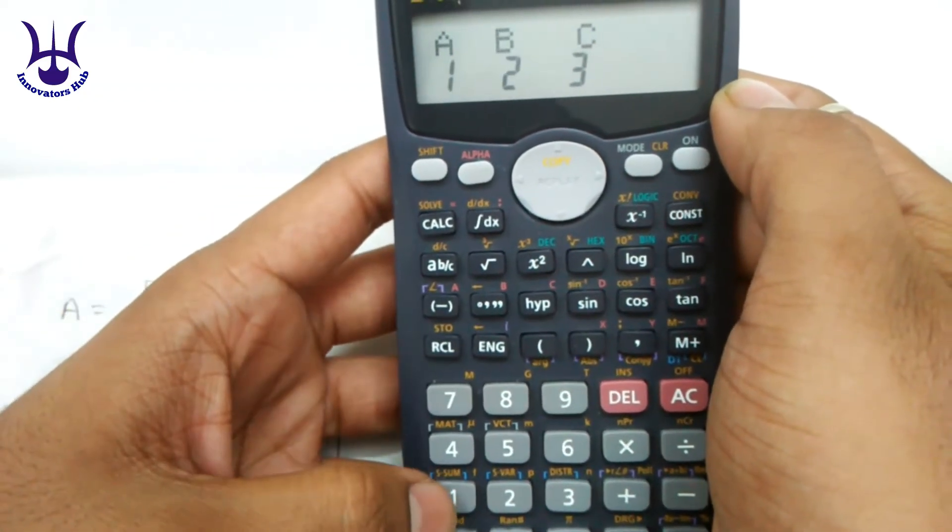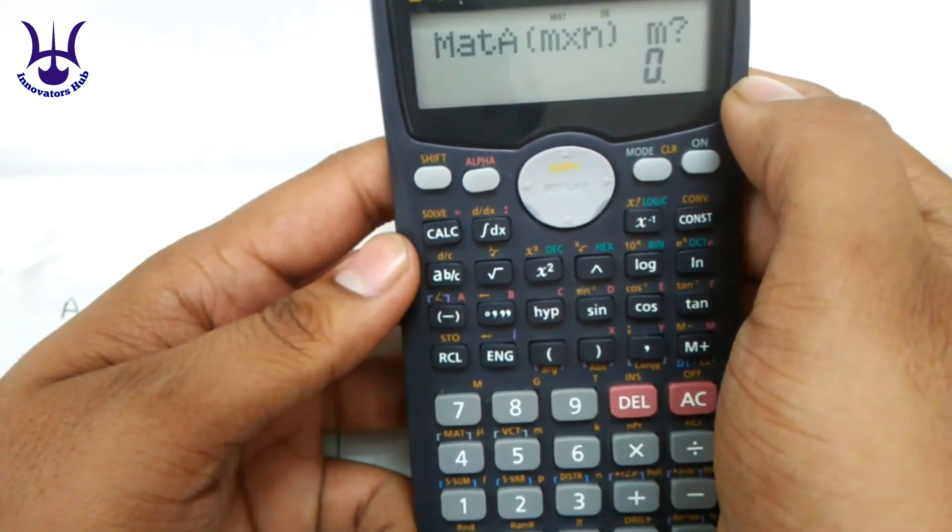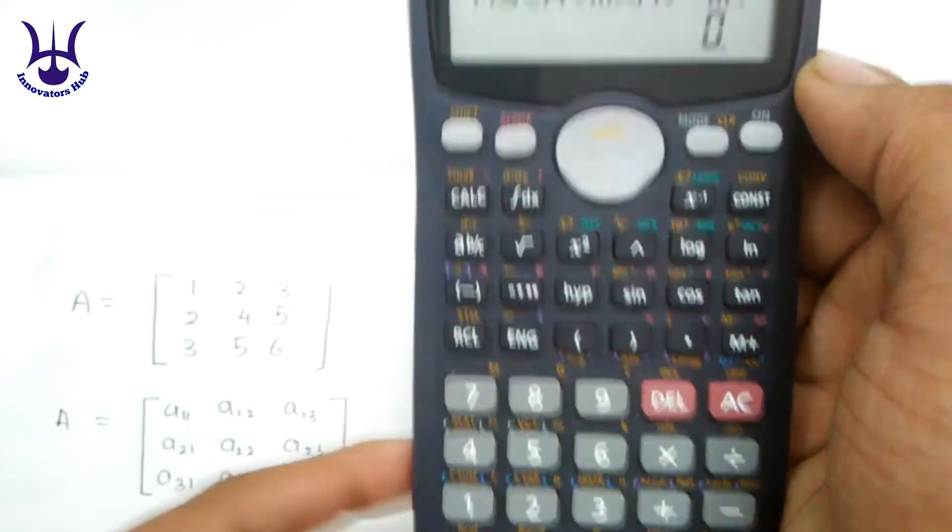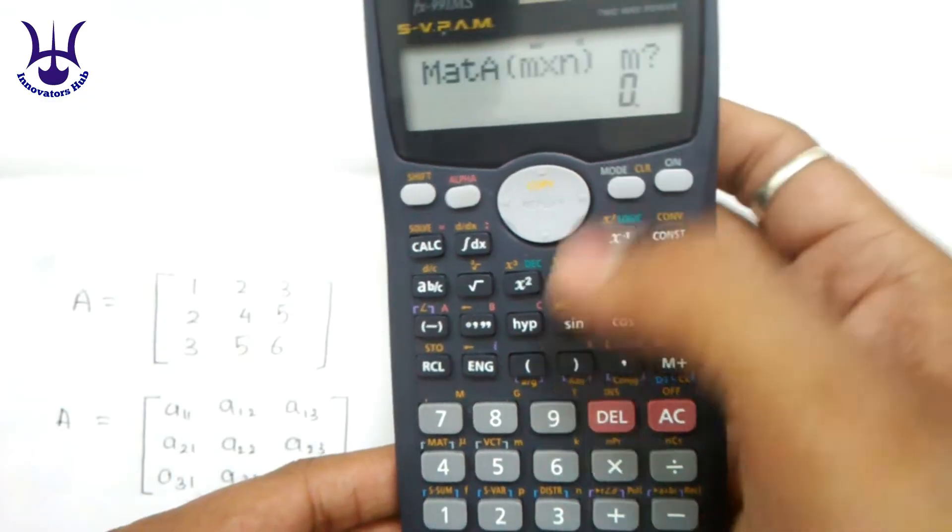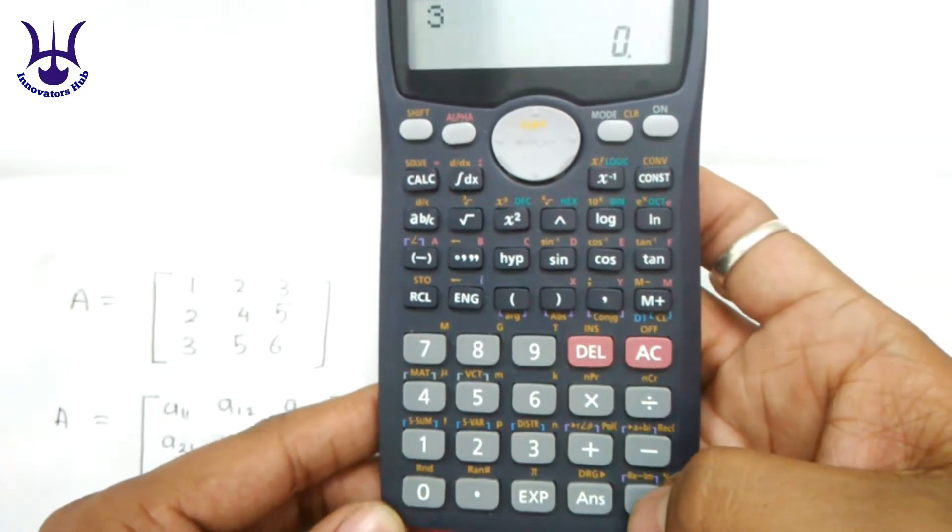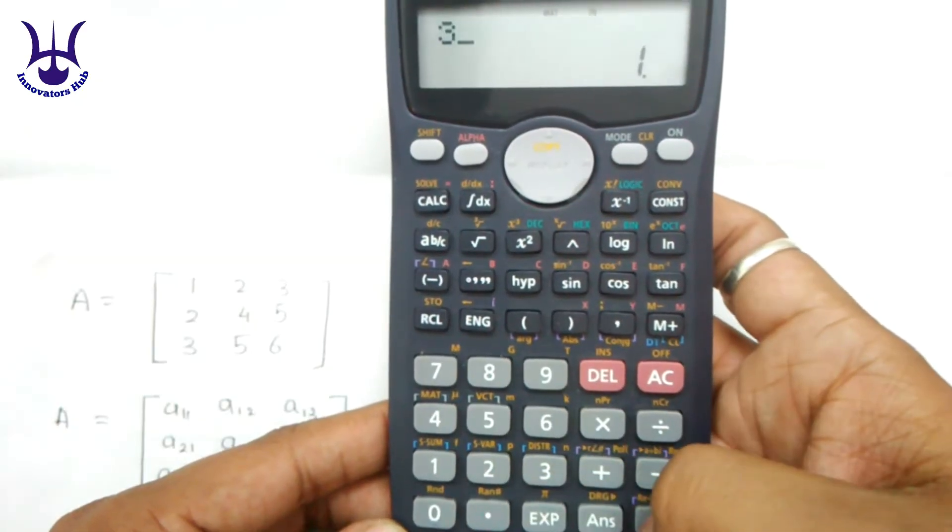Now you get some values like A, B, C which represent different matrices. Suppose we have selected 1. Now we have to put the value of M into N of the matrix. Here we have a 3 by 3 matrix so we have to feed the value 3 by 3.